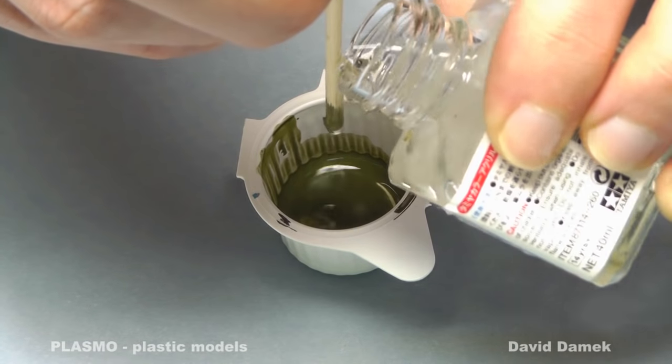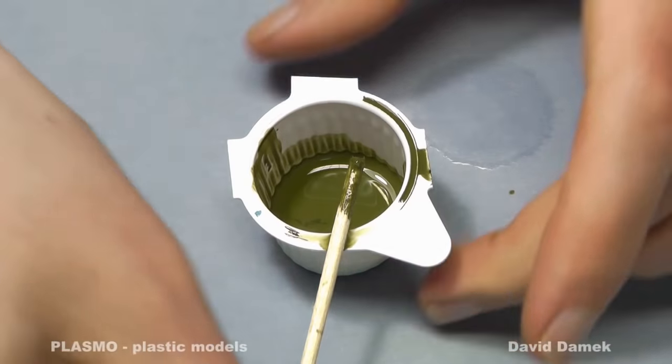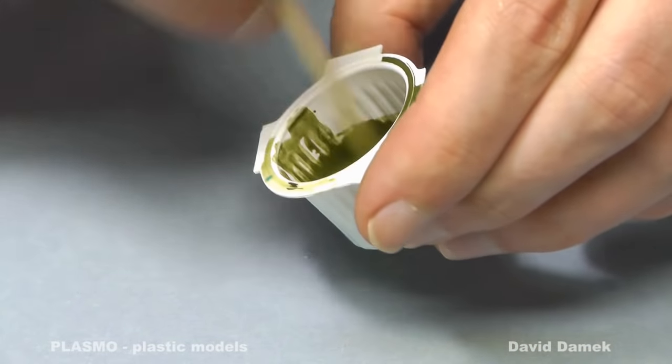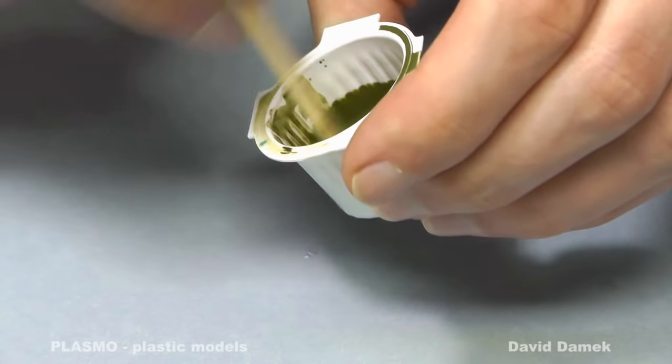Now I add the magical ingredient which is paint retarder agent. Just a few drops. I use Tamiya retarder to prolong paint's drying time and to avoid forming paint dust on the model surface.